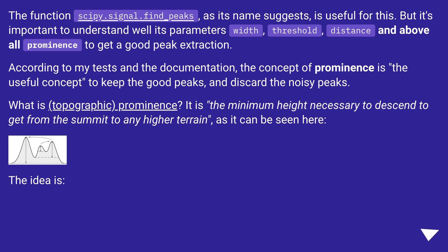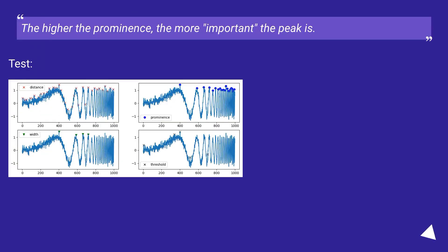What is topographic prominence? It is the minimum height necessary to descend to get from the summit to any higher terrain, as can be seen here. The higher the prominence, the more important the peak is.